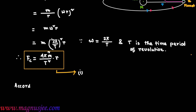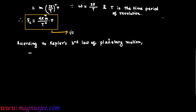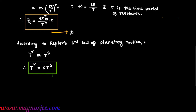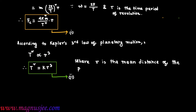According to Kepler's third law of planetary motion, the square of the time period is proportional to the cube of the mean distance. Therefore T² = kR³, where k is the constant of proportionality and r is the mean distance of the planet from the Sun. This is equation 2.